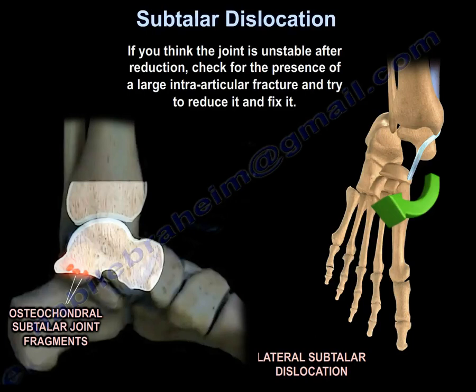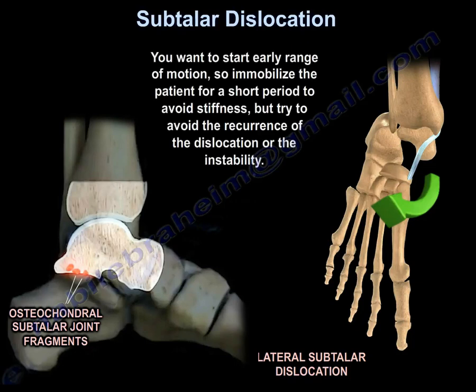Large fragments should be fixed, and small fragments entrapped in the joint should be excised. If you think the joint is unstable after reduction, check for the presence of large intraarticular fractures and try to reduce and fix them. You want to start early range of motion, so immobilize the patient for a short period to avoid stiffness, but try to avoid recurrence of the dislocation or instability.